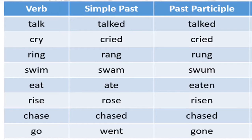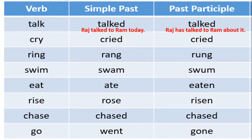Let us look at examples to understand the difference. When 'talked' is used in simple past: 'Raj talked to Ram today' — the action is completed and finished. When 'talked' is used as a past participle: 'Raj has talked to Ram about it' — here 'has talked' follows the helping verb 'has,' so 'talked' is in the past participle. The difference is that simple past shows a fully completed action, while past participle follows a helping verb in the perfect tense.